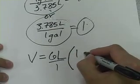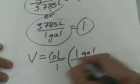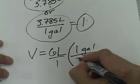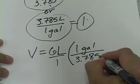So we take it and we say 1 gallon divided by 3.785 liters.